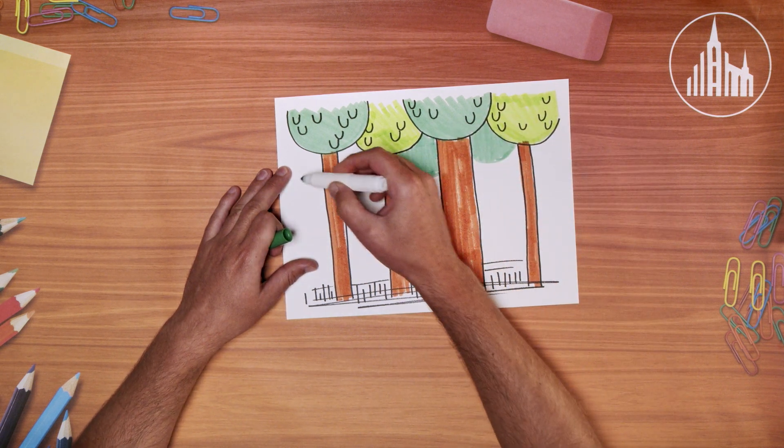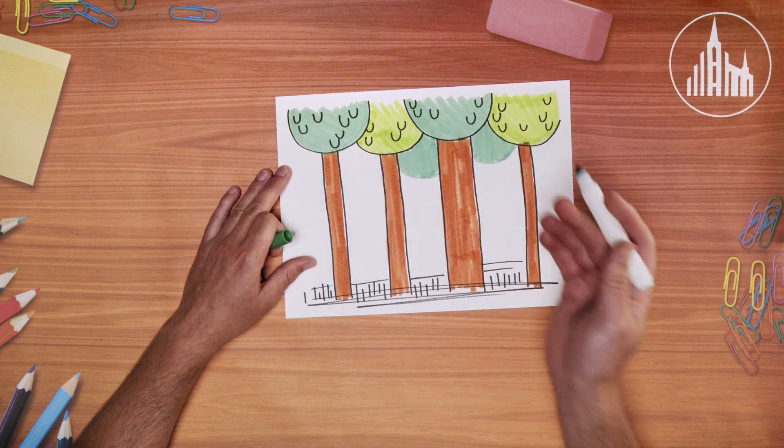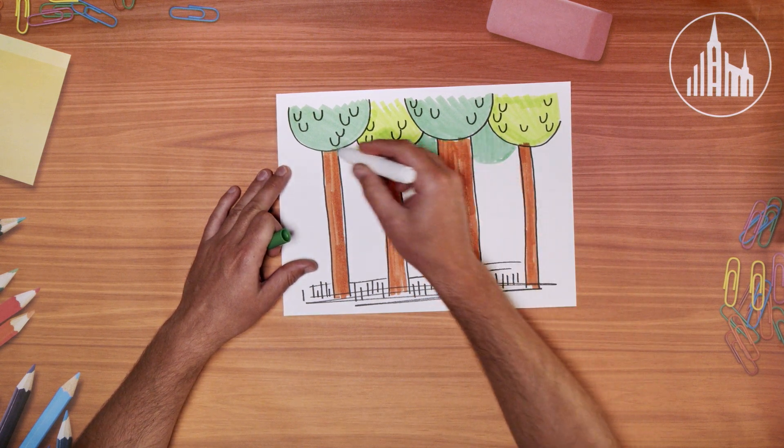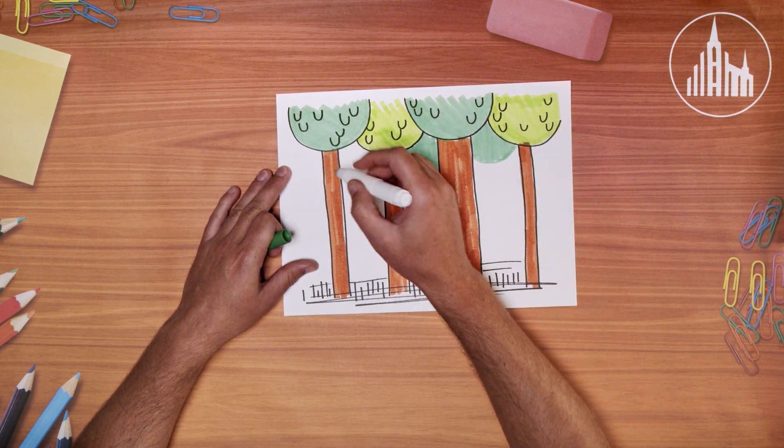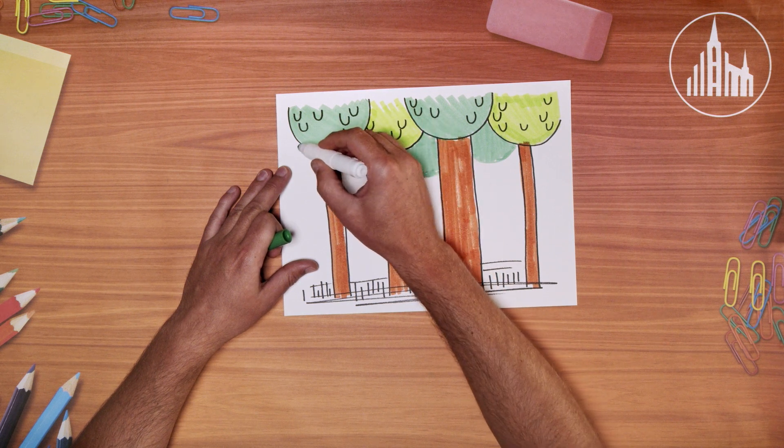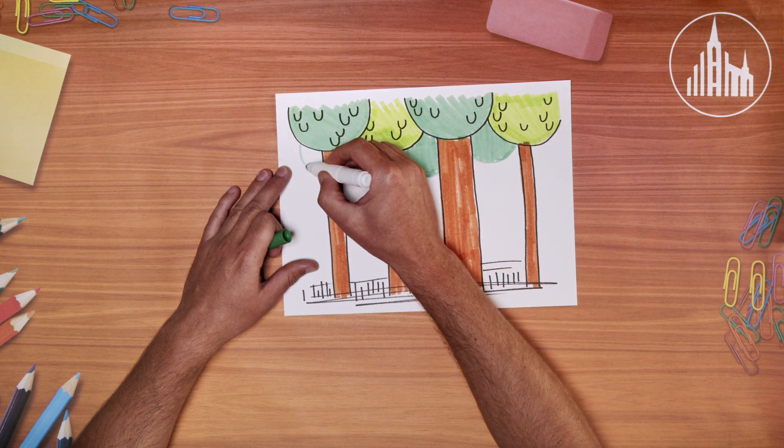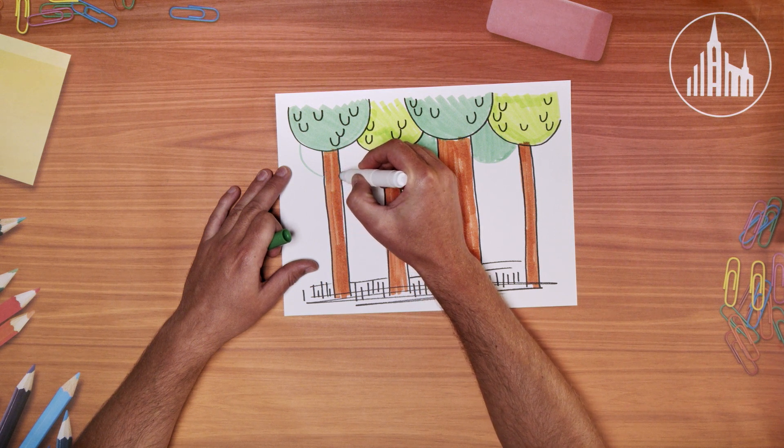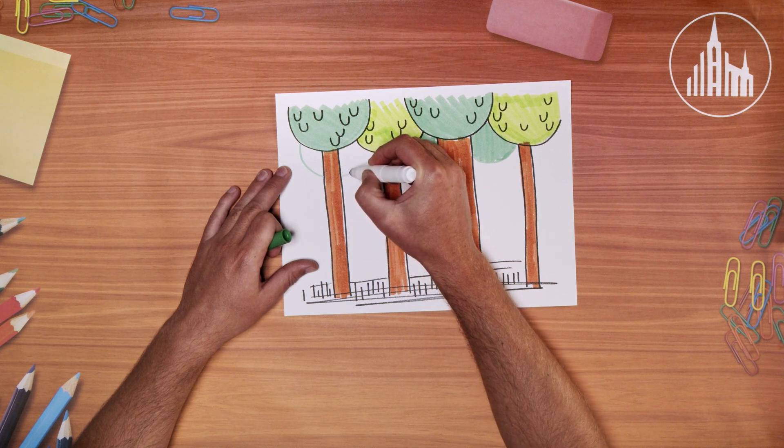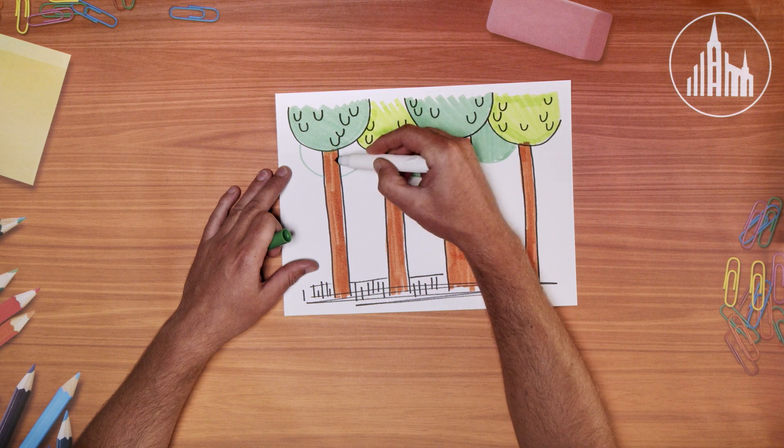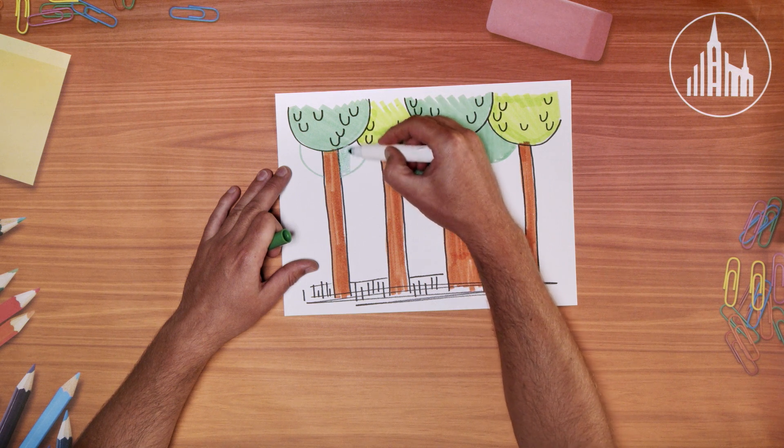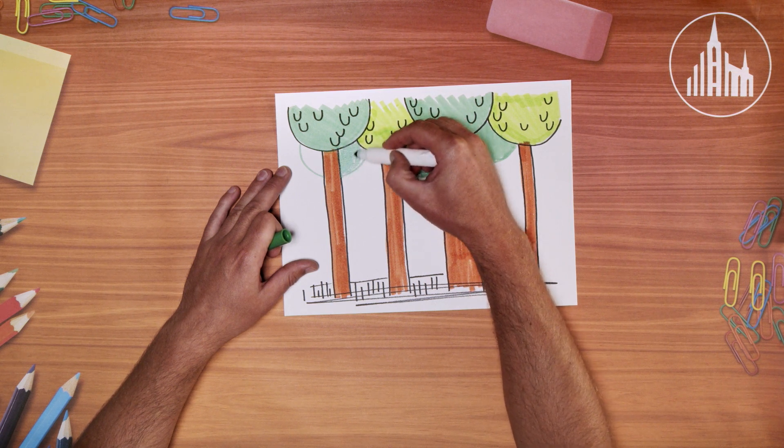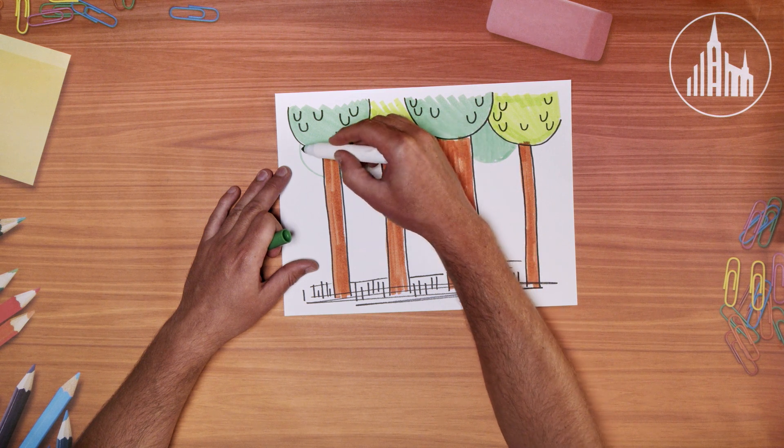There we go. Let's do a couple more over here. And you can make the trees go through the trunk of another tree if you do this thing where I draw part of the circle. And then when I get to the trunk of the tree, I lift it up and I continue my circle. And then I put my marker back down and I finish my circle. That's a really good way to make it look like this tree is behind another tree.